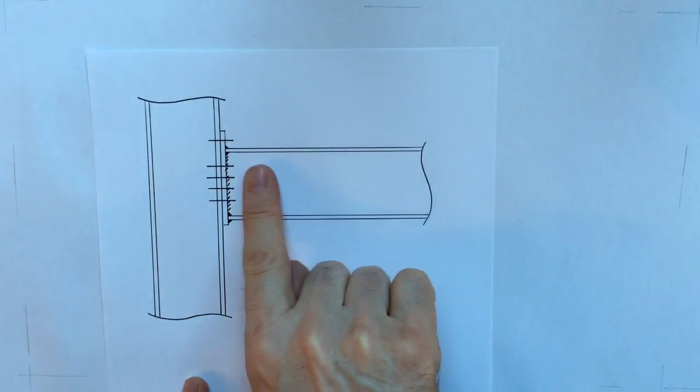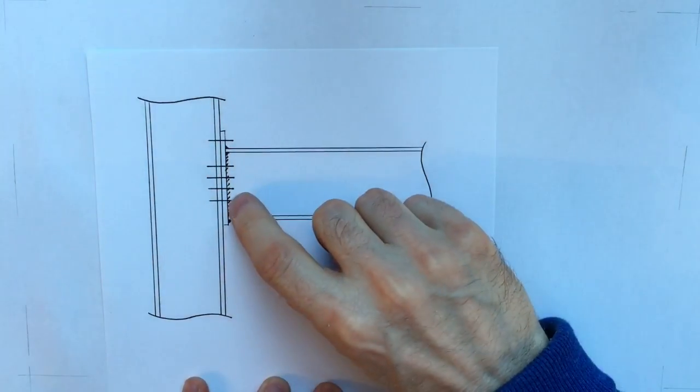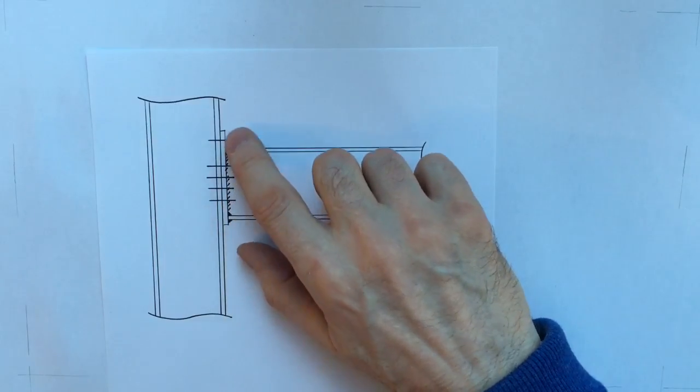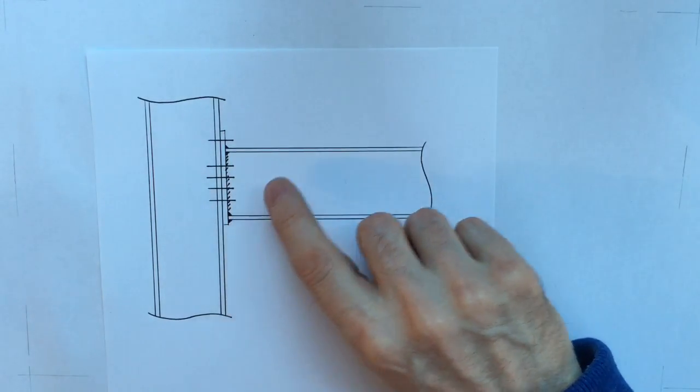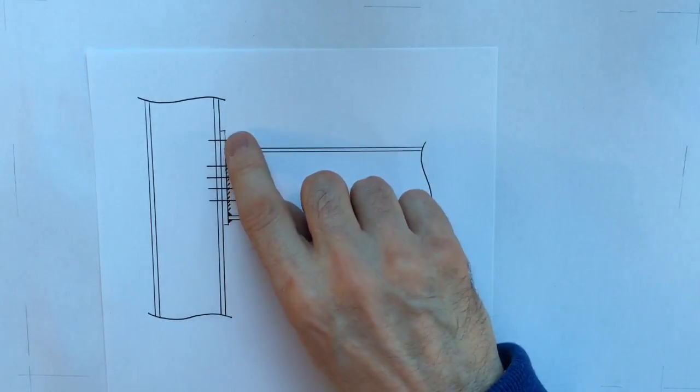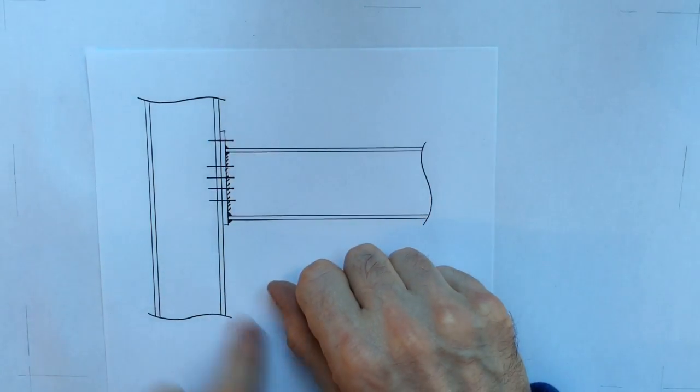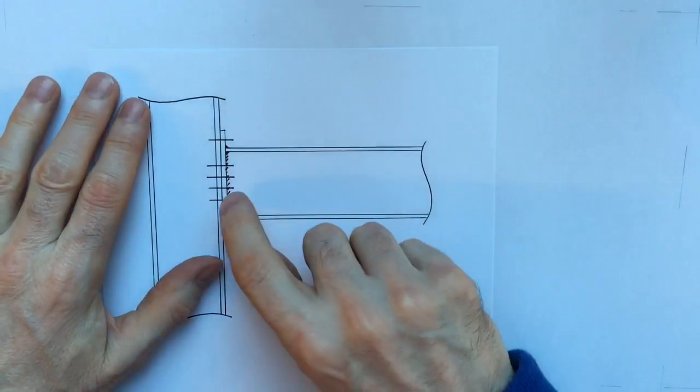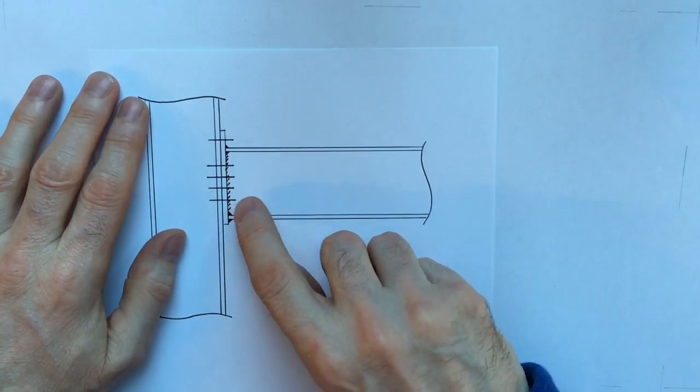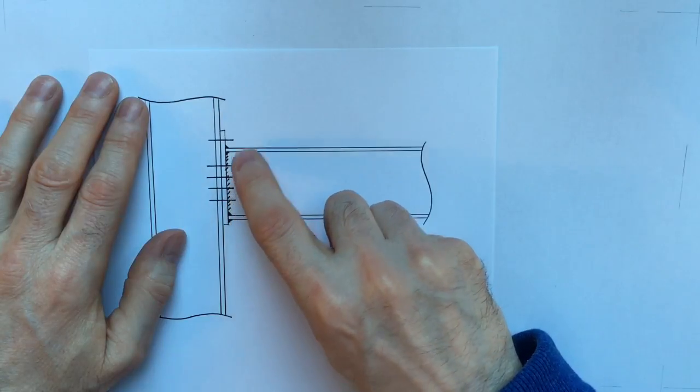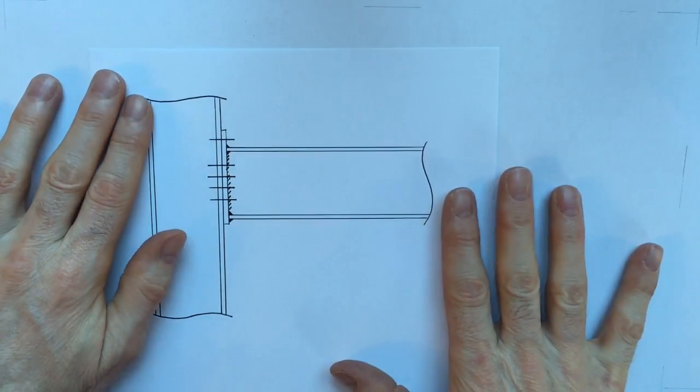Here you can see that this beam is coming into a column and it has a series of bolts through a welded end plate. The end plate is welded to the beam and then the bolts connect the plate to the column. Each of these lines represents two bolts so this connection has two, four, six, eight, ten bolts in total.